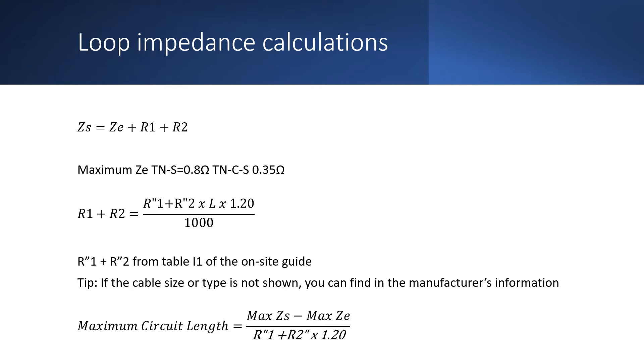So we know what to use for ZE, we now need to know what to use for R1 plus R2. This can be calculated by using the values in table I1 of the on-site guide. The table provides tabulated values quoted in milli-ohms per metre for a variety of sizes of line conductor and CPC. These figures are multiplied by the length and a correction factor of 1.2 and then divided by 1000 as shown in the example here.